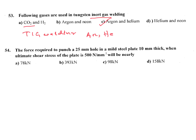The force required to punch a 25 mm hole in a mild steel flat, 10 mm thick, when the ultimate shear stress of the flat is 500 N/mm² will be near... Given data: diameter of hole = 25 mm, thickness T = 10 mm, ultimate shear stress = 500 N/mm². All units are in mm.